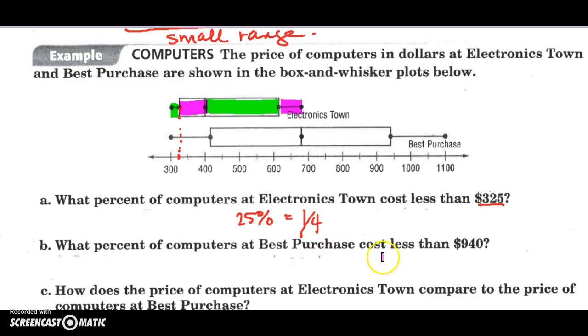All right, what percent of computers at Best Purchase costs less than $940? Let's locate $940. Here's $950. So $940 would be this line. And costing less, that's one, here we go. Here's one-fourth, two-fourths which is half, and three-fourths are less. So three-fourths is the same thing as 75% or three of the four.